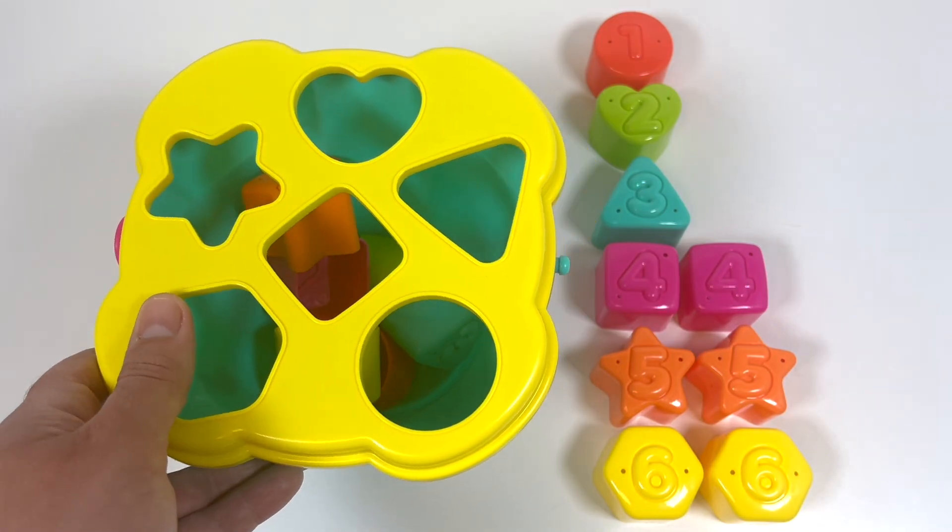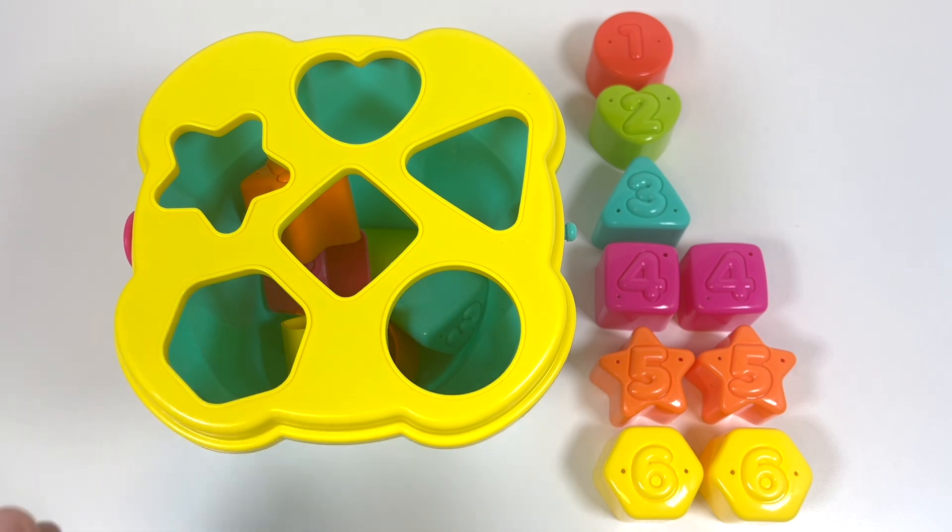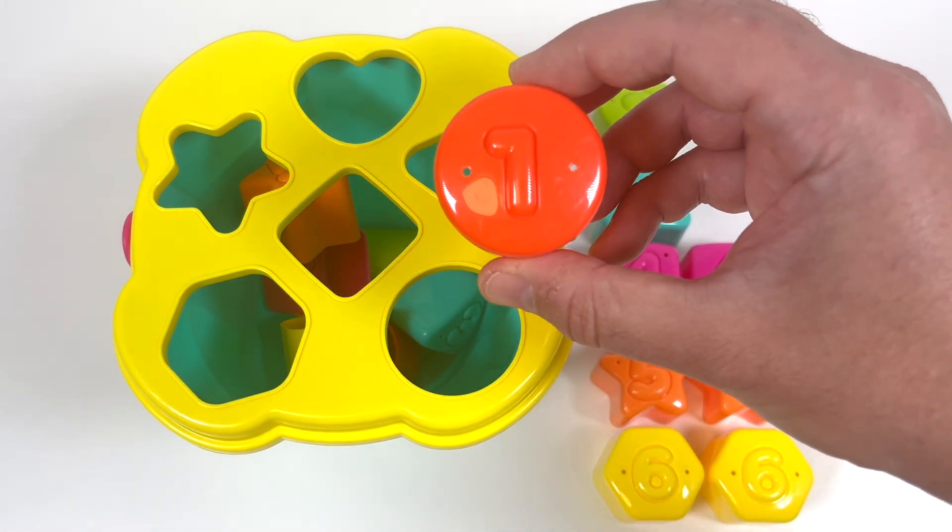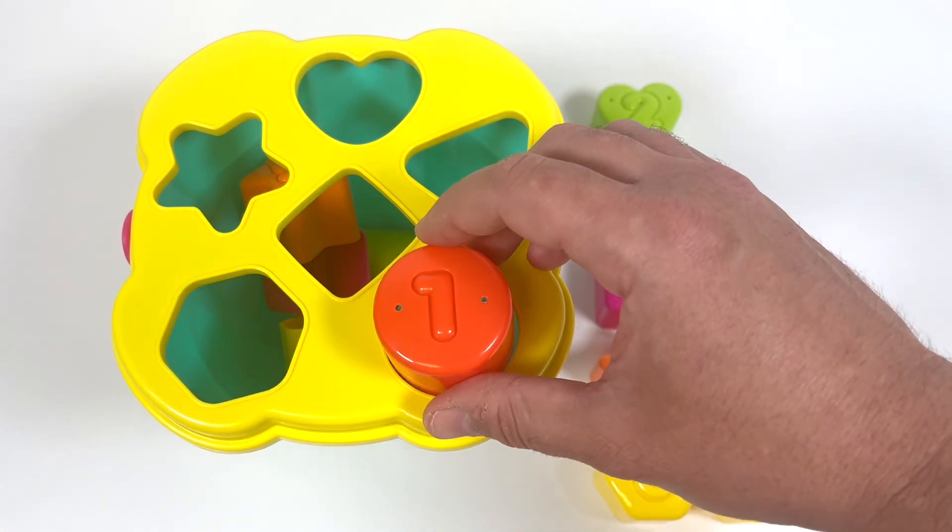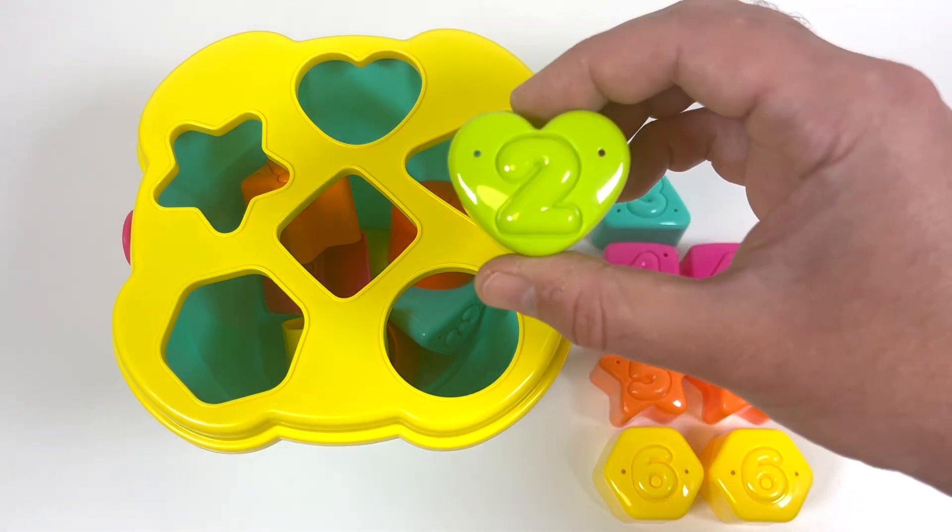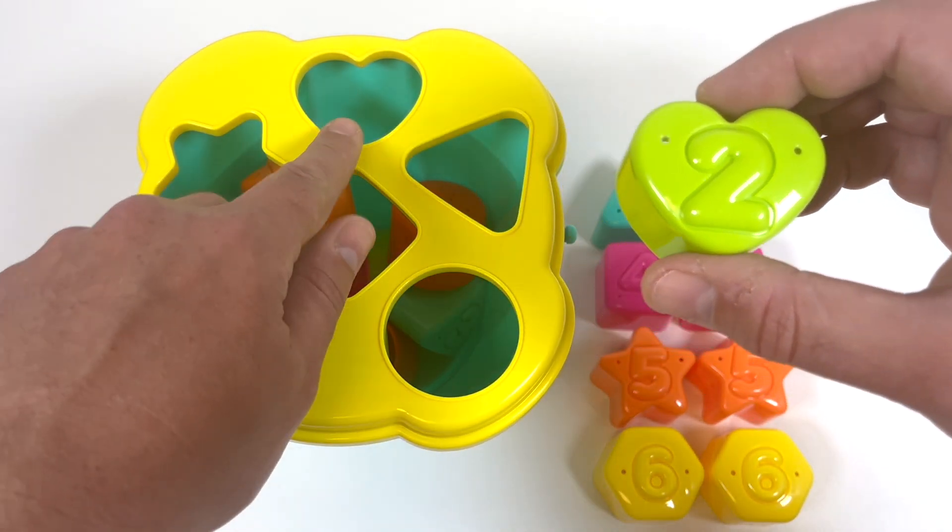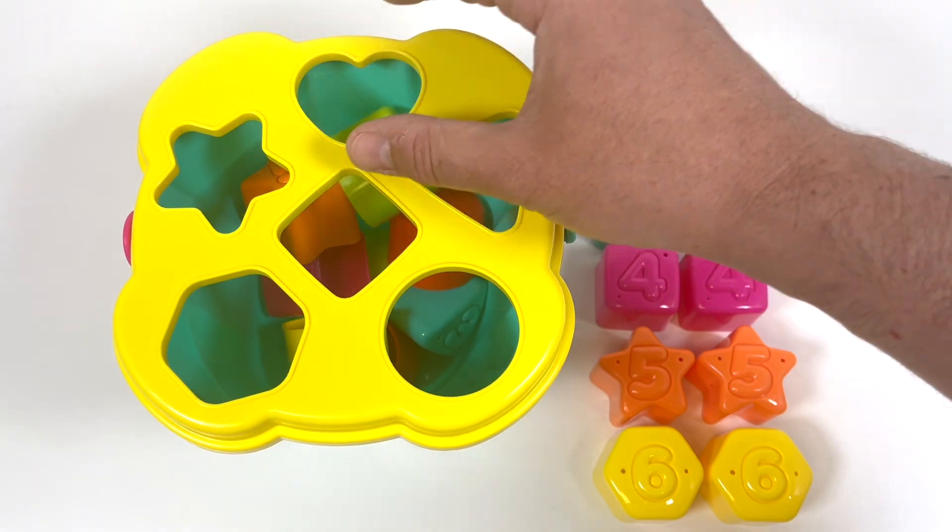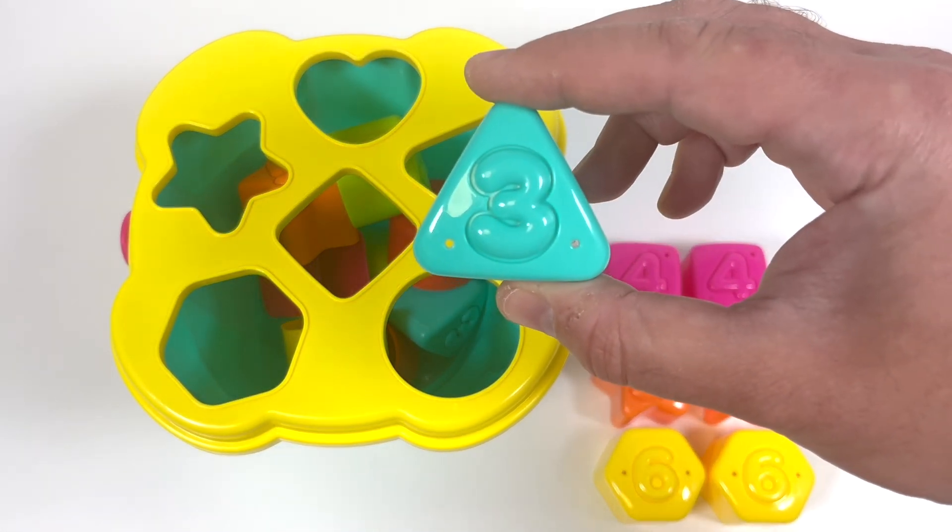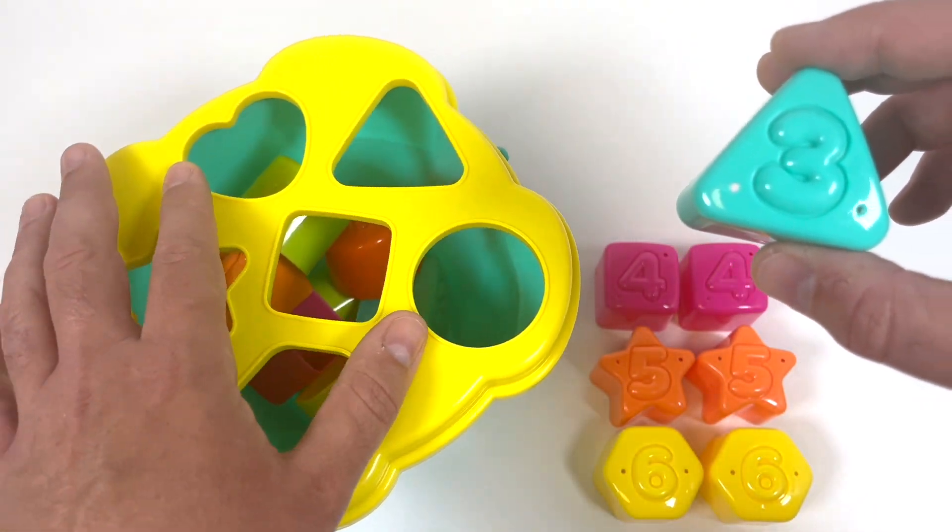Okay, we did one of each. So let's go back and put the rest in. Our red circle goes right here. The green heart goes in here at the top. We have the blue triangle. It goes right here.